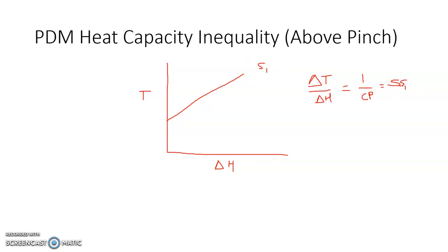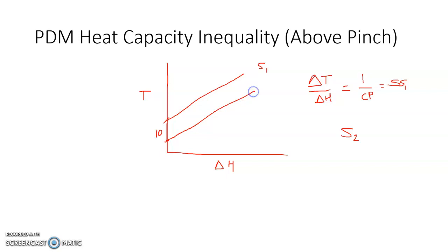Now if we have another stream S2 receiving energy from S1, S2 will be at a lower temperature. If S2 has the same CP as S1, its slope is the same and the two lines are parallel. The vertical difference — delta T minimum of 10 degrees — remains constant throughout the heat exchange. There is no problem in this case.